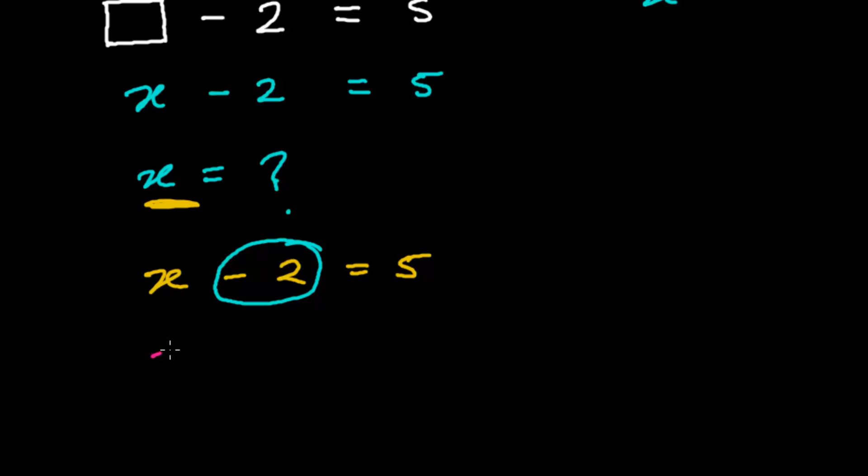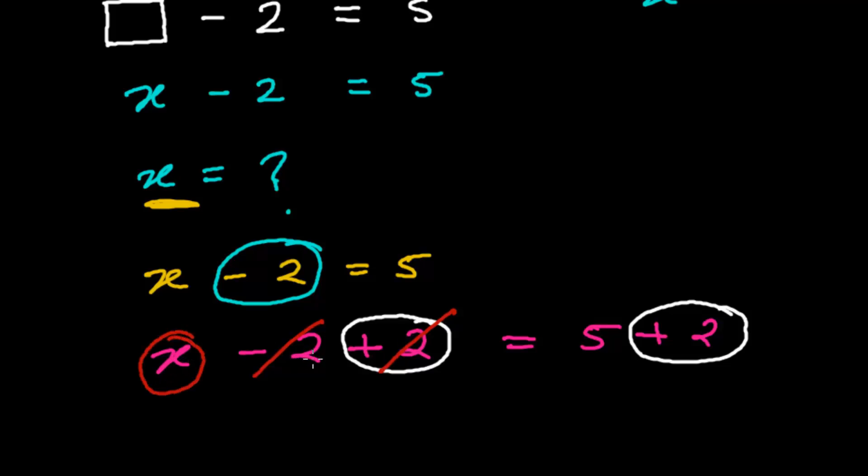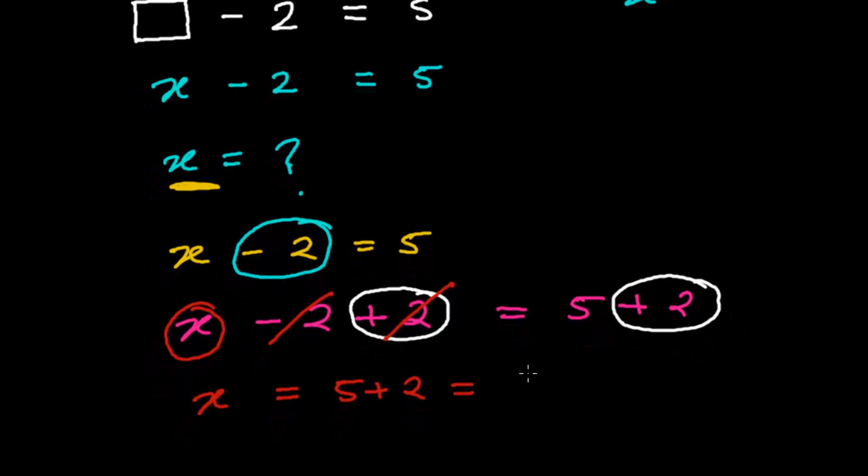So to cancel out this negative 2, what we're going to do, we're going to add 2 here. And we're going to do that both sides. The same amount of the number, you can add left-hand side also and on right-hand side also. You can add, you can subtract, both depending on the situation. So now here I got one option. I can cancel this negative 2 and positive 2. So everything from the left-hand side except this X is removed. So this X is equals to now this 5 plus 2, which is ultimately 7. So X equals to 7.